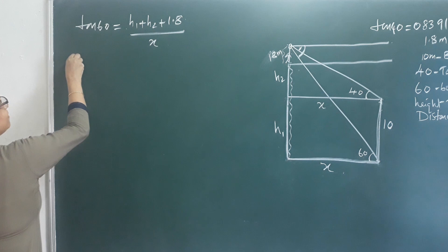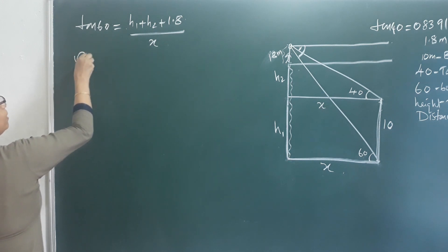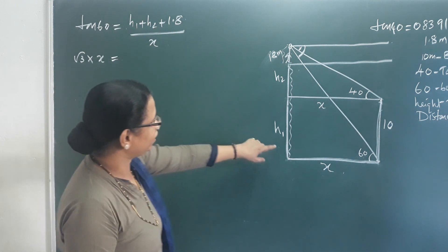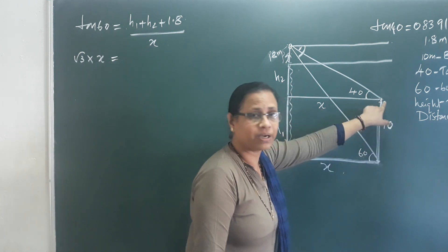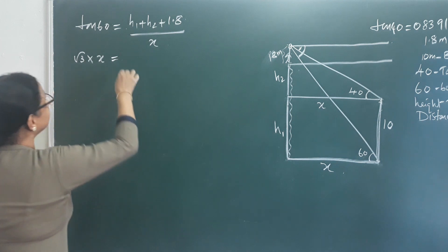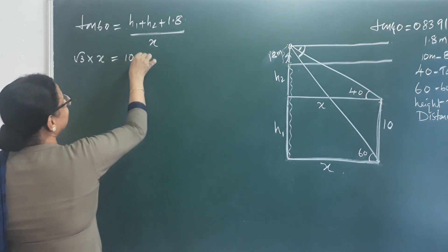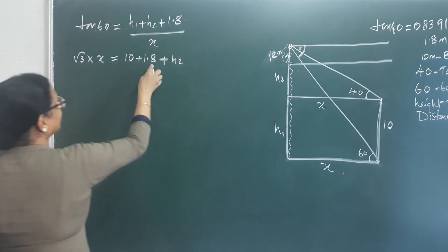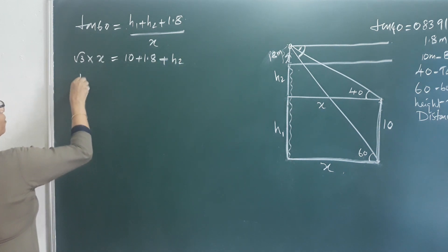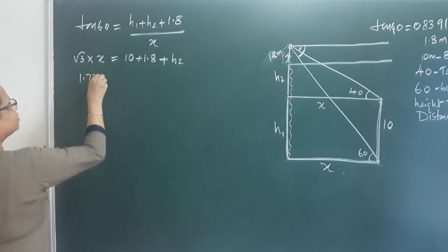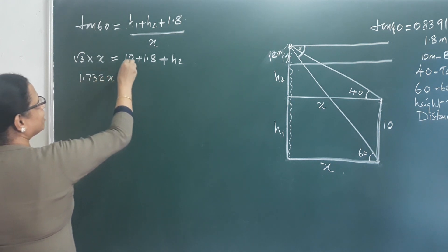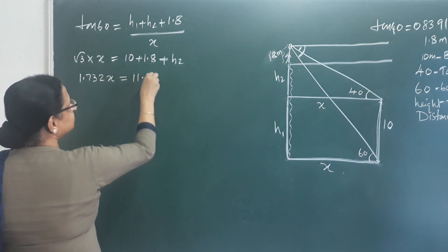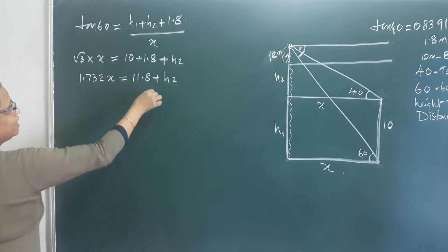So 1.732X equals h1 plus h2 plus 1.8. Since h1 is the building height of 10 meters, we have 1.732X equals 10 plus 1.8 plus h2, giving equation 1: 1.732X minus 11.8 equals h2.